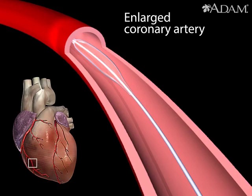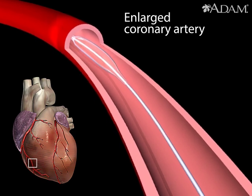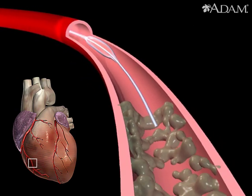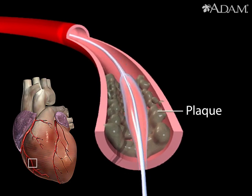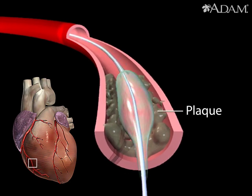Balloon angioplasty is a procedure used to open narrowed or blocked arteries. It uses a balloon attached to a catheter that's inserted into an artery. At the place where deposits of plaque have closed off or narrowed the channel for blood flow, the balloon is inflated.